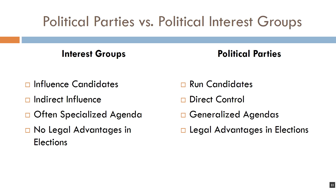Interest groups do not have direct control over public policy. They have no lawmaking authority because they have not run candidates and therefore have not won elections. Without winning elections, you have no lawmaking authority, and therefore interest groups have to rely on their ability to influence those who have won elections. They play a very big role in shaping what laws pass and fail, but they do this by persuading or informing people in office — by lobbying them, providing information, services, or electoral support.